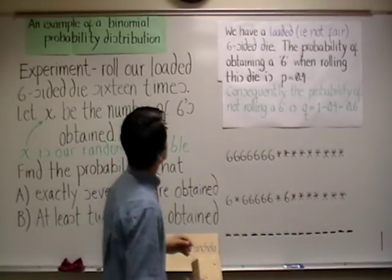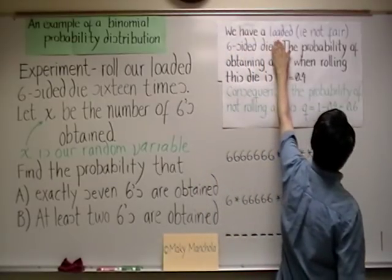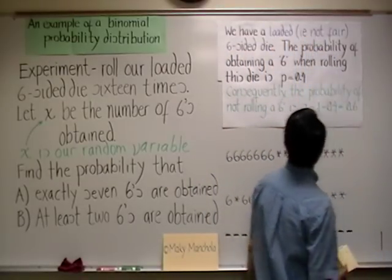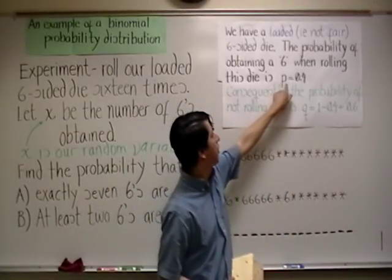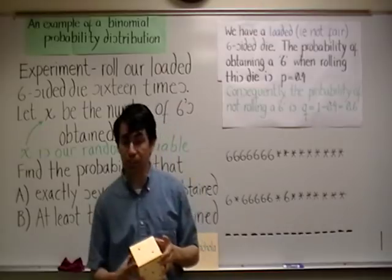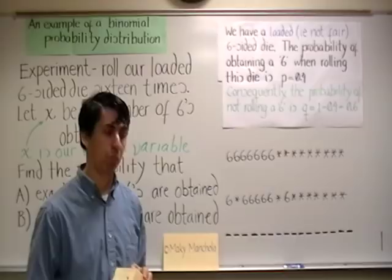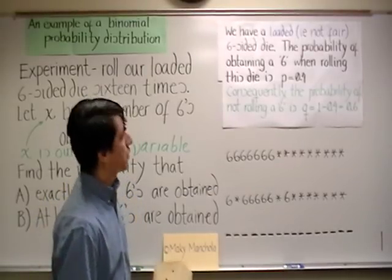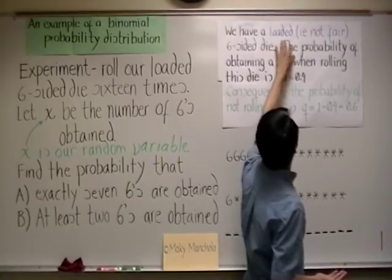Now, we are making reference to a loaded die, a loaded six-sided die. What that means is that the die is not fair. And we can see that from the probability of gaining six. If the die were fair, the probability of gaining six would have to be one out of six, not 0.4. So that's what we mean by loaded. It is not fair.